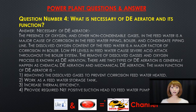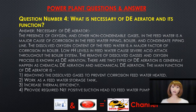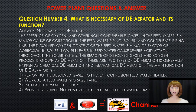Question number four: what is the necessity of a de-aerator and its function? The presence of oxygen and other non-condensable gases in feed water is a major cause of corrosion in feed water piping, boiler, and condensate piping lines. The dissolved oxygen content of feed water is a major factor of corrosion in the boiler. Low pH levels in feed water cause severe acid attack throughout the boiler system. The process of removing dissolved gases and oxygen is known as de-aeration, and there are two types: chemical de-aeration and mechanical de-aeration.